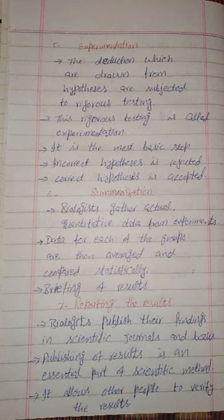The deductions which are drawn from hypotheses are subjected to rigorous testing. Rigorous means much testing — many tests are done in experimentation. Deductions are assumed results, and then we prove the hypothesis correct or incorrect. This rigorous testing is called experimentation.